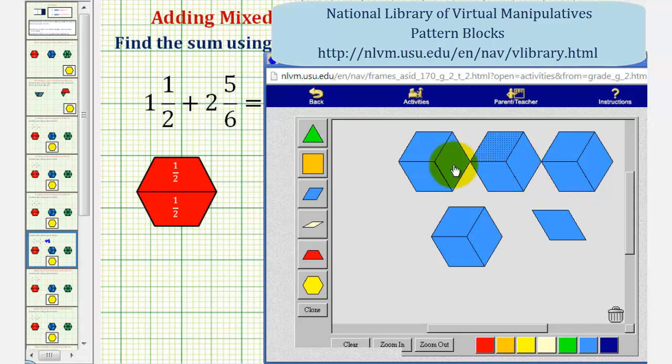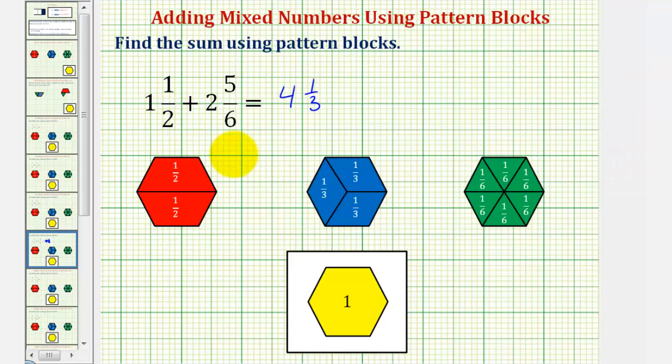And now if we count or enumerate the blue pattern blocks, we have three, six, nine, twelve, thirteen blue pattern blocks, or thirteen-thirds. So we can also express the sum as thirteen-thirds.